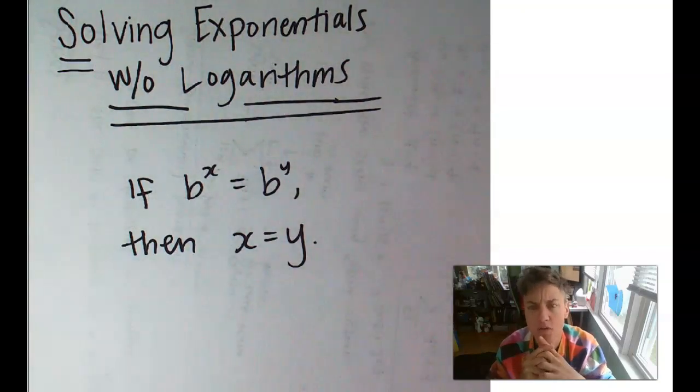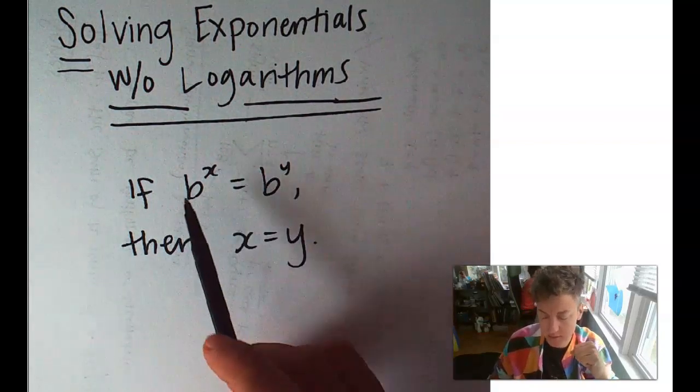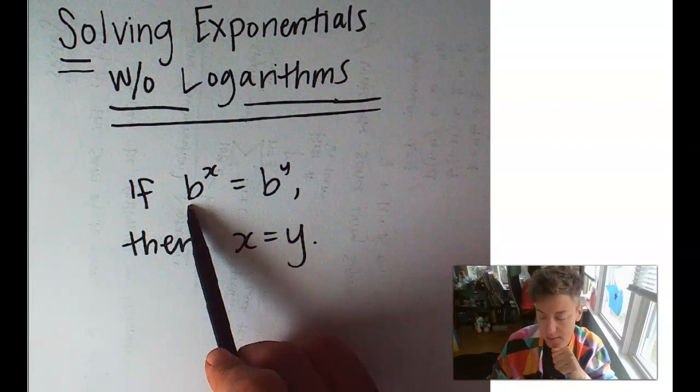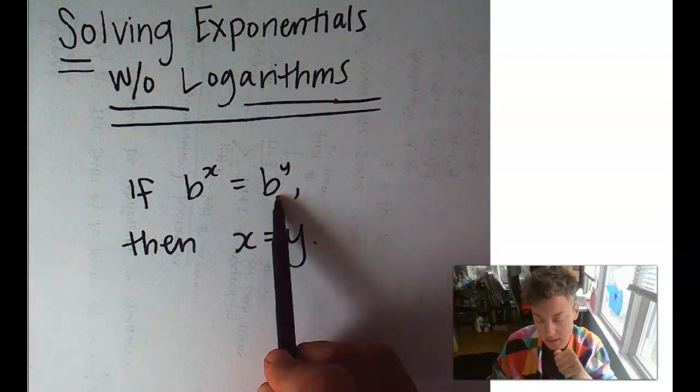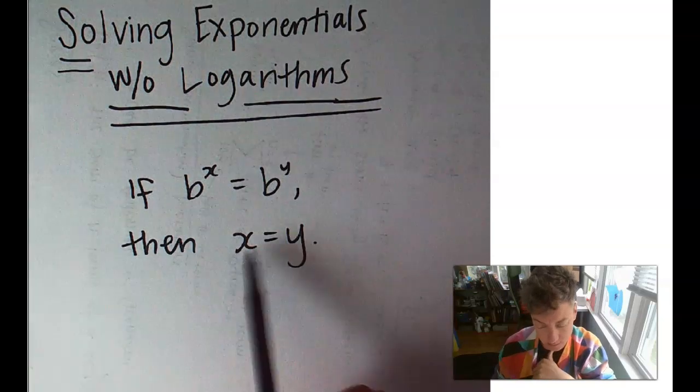How in the world will we do that? Well, if we can get our equation to have the same base, then the exponents must be equal to each other, and we can set those equal to each other themselves.